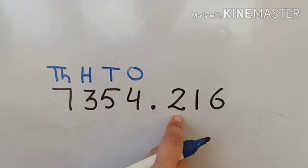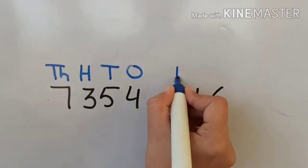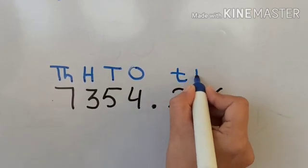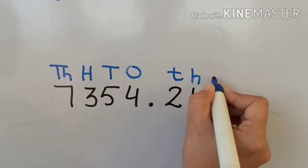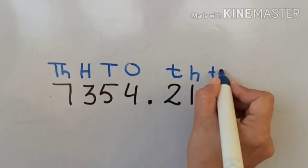Now mark the places for decimal part. 2 is at tenths place, hundredths, and thousandths.